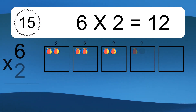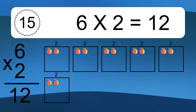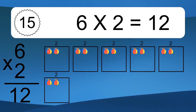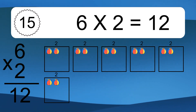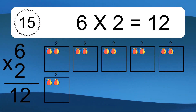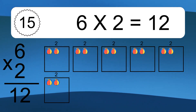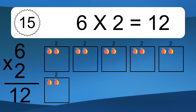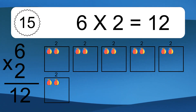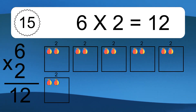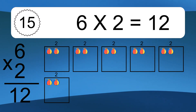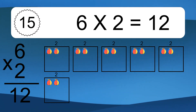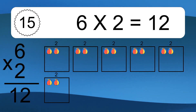6 times 2 equals what? 6 times 2 equals 12. We have 6 boxes, and each box has 2 colorful balls inside. If you count all the balls in all the boxes together, you will have 6 times 2 balls. This equals 12 balls.